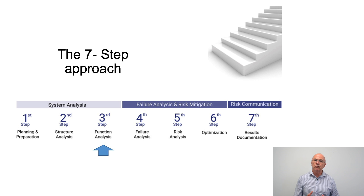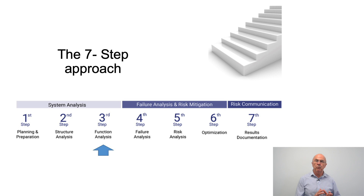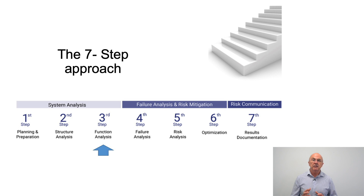A quick recap on the seven-step approach. Remember it's broken down into three distinct phases: system analysis, which includes steps one, two, and three; failure analysis and risk mitigation, which is four, five, and six; and risk communication, which is step seven. Today we're focusing on function analysis.